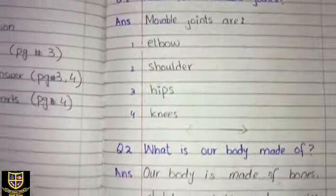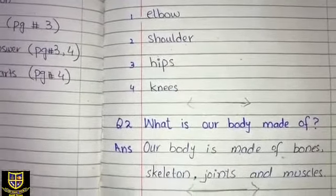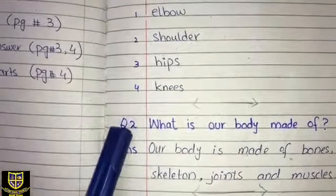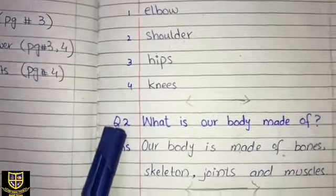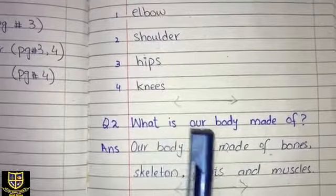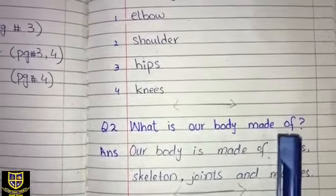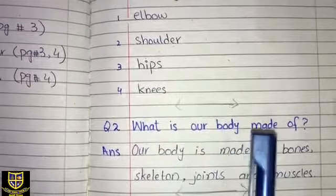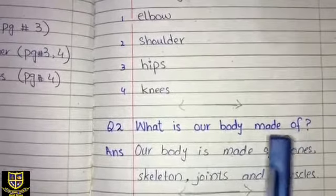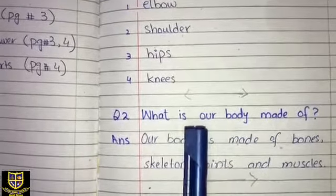Now we will move towards question number two. Draw your ending line and write question number two: What is our body made of? Our body is made of which things? This is also covered in the chapter.